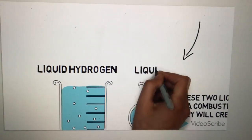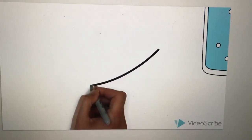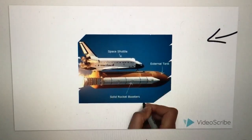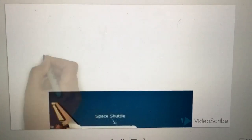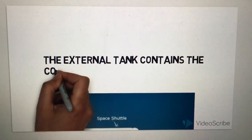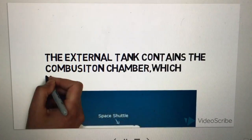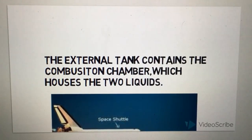Liquid hydrogen and liquid oxygen. The external tank contains the combustion chamber, which houses the two liquids.